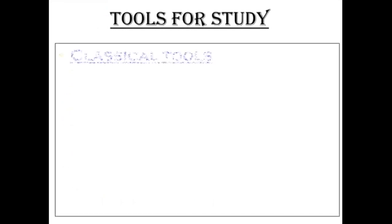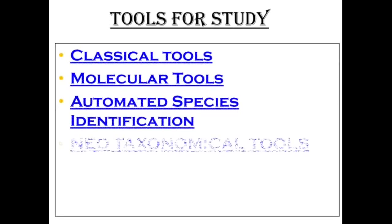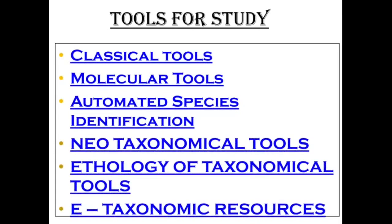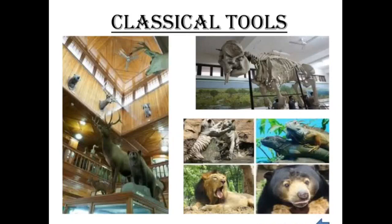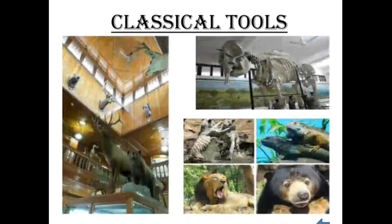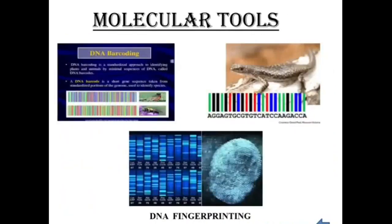Next topic is tools for study in taxonomy. There are many tools used to identify organisms: classical tools, molecular tools, automated species identification, neotaxonomic tools, ethology of taxonomic tools, and new taxonomic resources. The classical taxonomic tools are: taxonomic keys, museums, zoological parks, marine parks, and printed taxonomic tools.